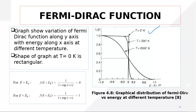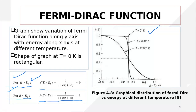As temperature increases, there is a possibility that electrons can move from the valence band to the conduction band. If an electron has moved from the valence band to the conduction band, it leaves a vacancy in the valence band, so not all levels below the Fermi level are fully occupied anymore. As a result, the Fermi function no longer looks like a step function — it takes on the shape of these smoother curves as temperature increases.